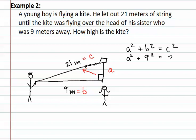Finally, we have C squared, which is twenty-one squared. This gives us A squared plus eighty-one equals twenty-one squared, which is four hundred and forty-one.